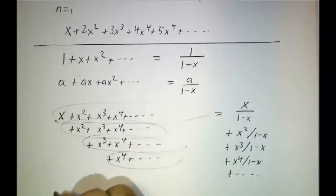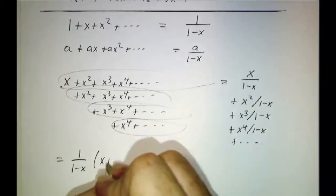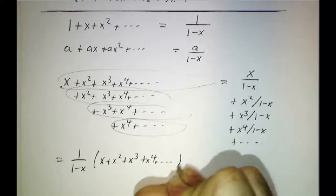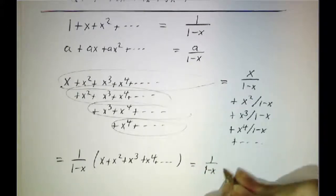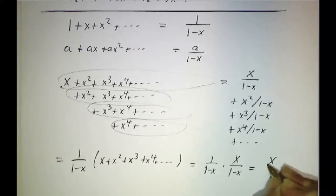In other words, we have 1 over 1 minus x times x plus x squared plus x cubed plus x to the fourth and so on. And that gives us 1 over 1 minus x times x over 1 minus x and that's x over 1 minus x squared.